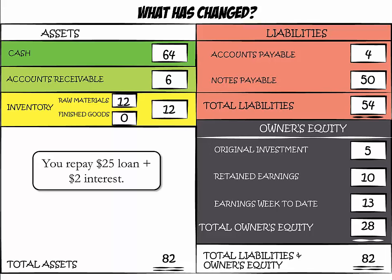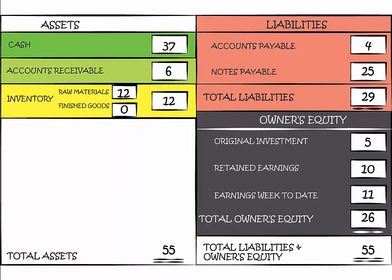The last thing to be affected is earnings, because the interest is an expense of doing business. Earnings are reduced by $2 from $13 to $11. Cash was reduced from $64 to $37, notes payable was reduced from $50 to $25, and earnings week to date was reduced from $13 to $11.